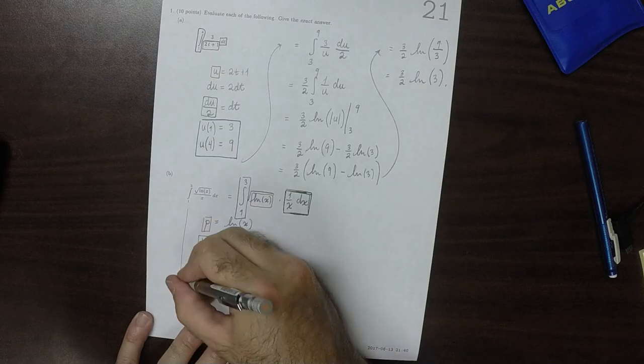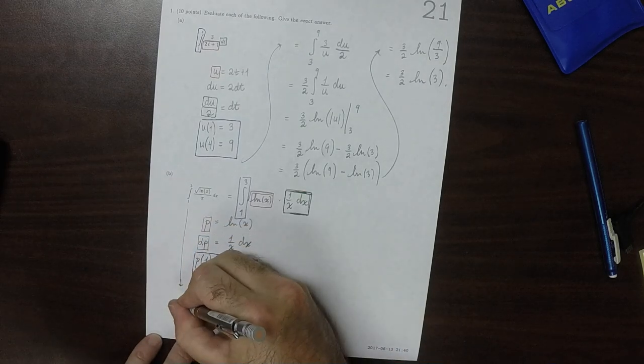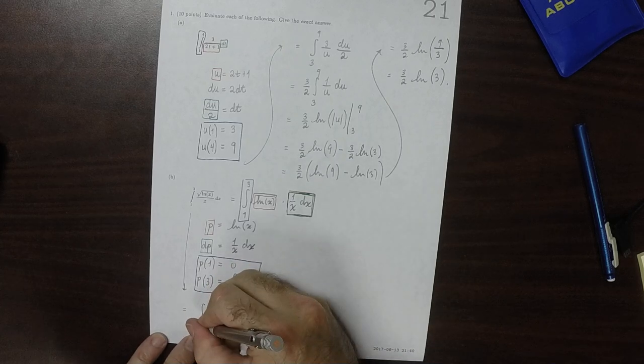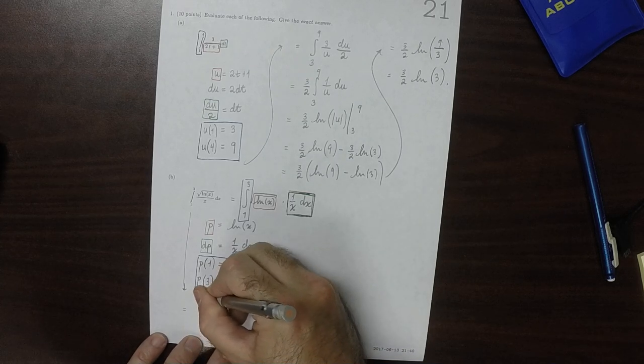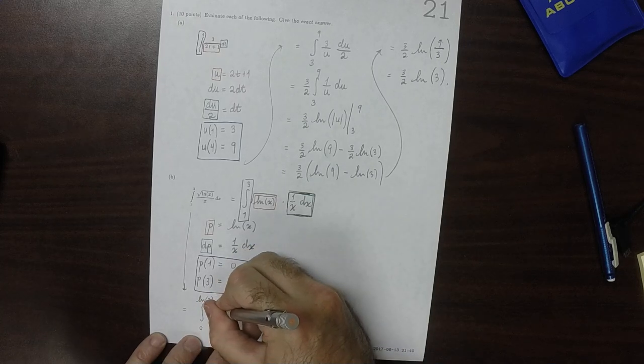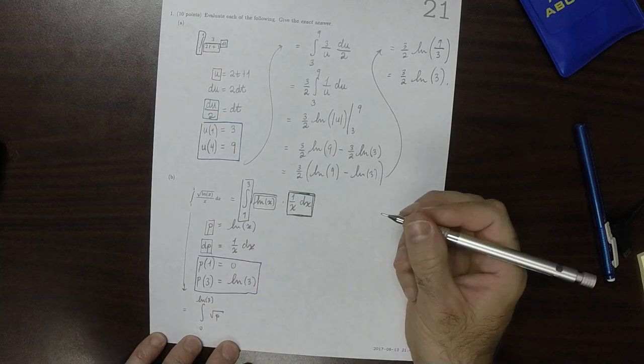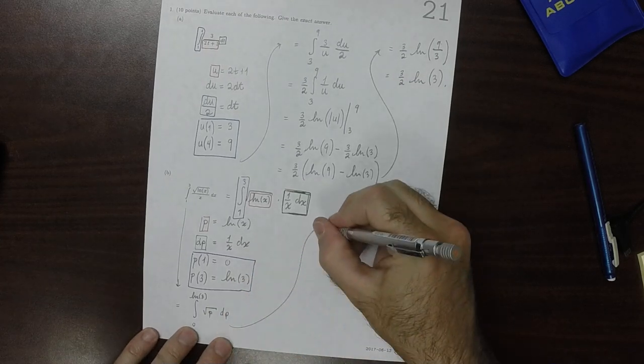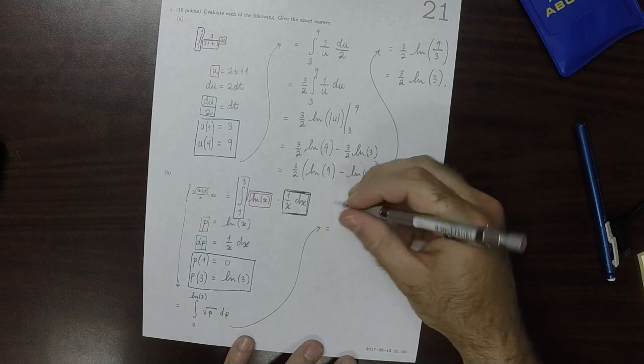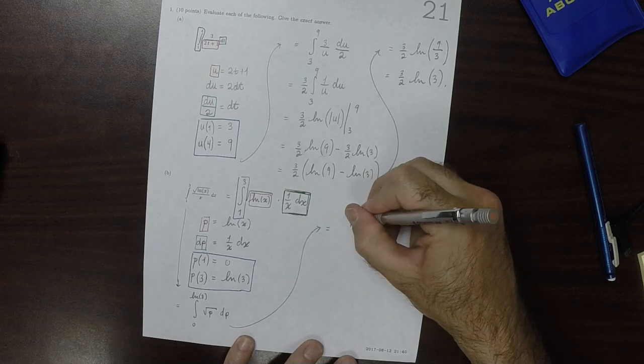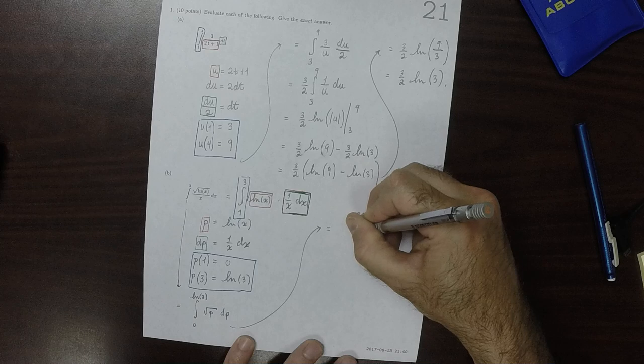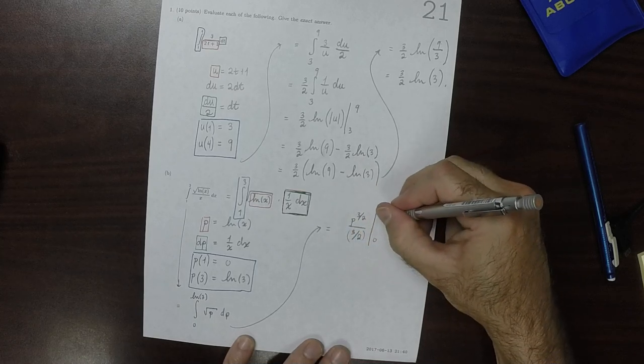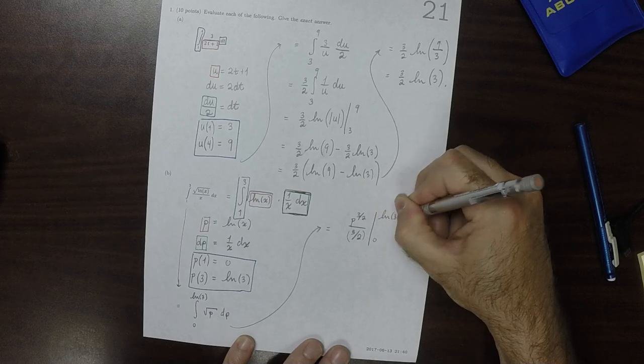After doing that, this is the integral from 0 to the log of 3, the square root of p dp. Well, that would be p to 3 halves divided by 3 halves, and then this evaluated from 0 to the log of 3.